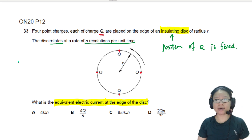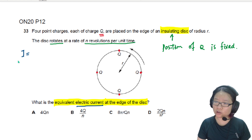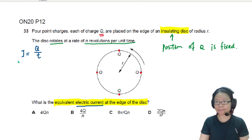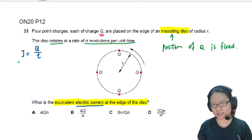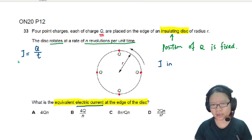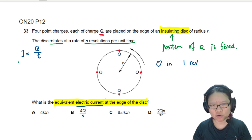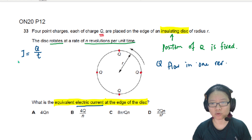So if you want to think about current, I will recall that current is equal to rate of charge flow, or charge per unit time. And then I think to myself, I can find the charge flow in one revolution. So write that down: Q flow in one revolution.